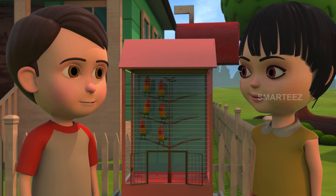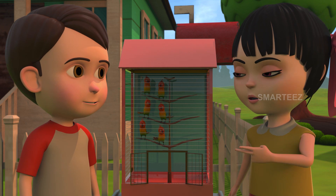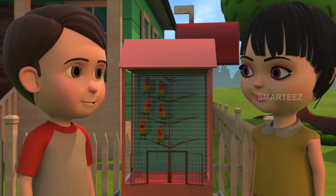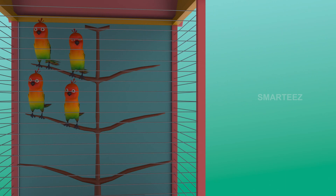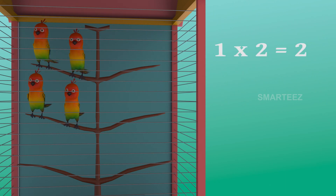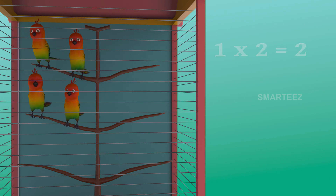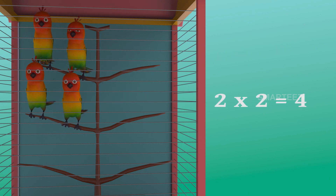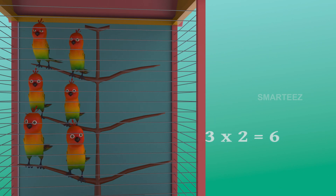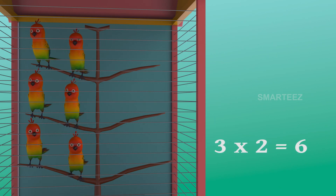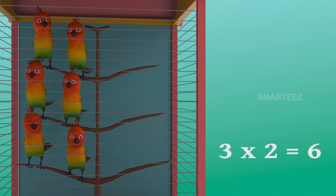There were four in the cage already. Now there are two more making it six. Yes, three twos make it six. The first set had two parakeets, and when the second set of two parakeets was added to the first set, it became four. Now the third set of two parakeets made it six. So three sets of two parakeets make it six parakeets.